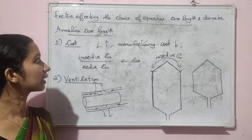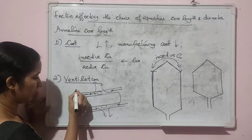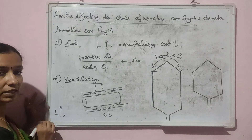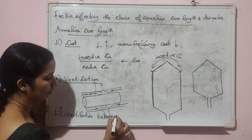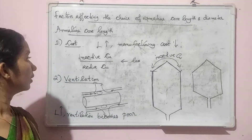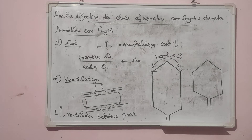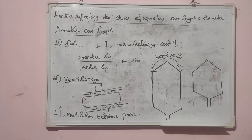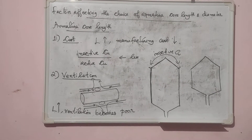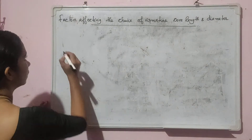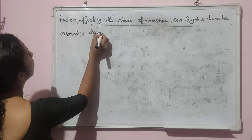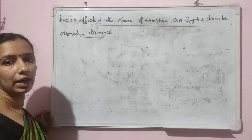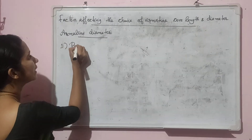So cost and ventilation are the two main factors considered for fixing the armature core length. Now let us see the factors affecting the choice of armature diameter. In case of armature diameter, the first factor to be considered is the peripheral speed.